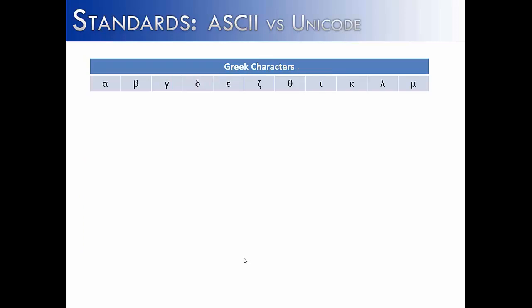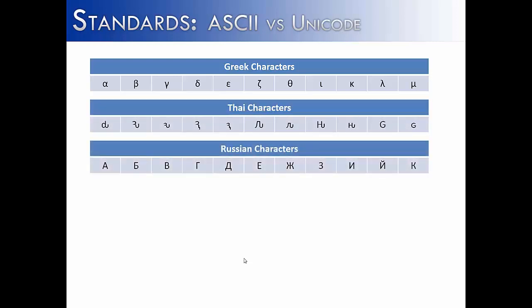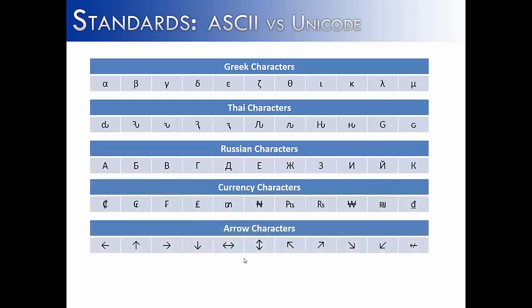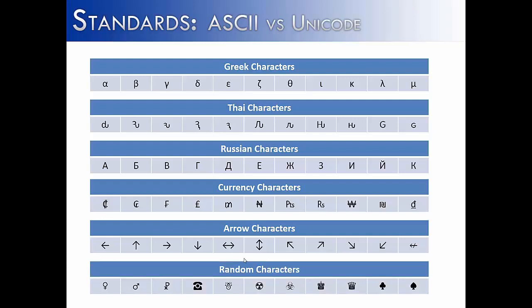Unicode stores all sorts of symbols. We see the beginning of the Greek alphabet, Thai characters, Russian characters or the Cyrillic alphabet, currency characters from around the world, and there's even a section for arrows inside of Unicode. Characters like the male or female symbol, the Cairo, the telephone, a weather alert saying snow, the nuclear symbol, biohazard, king and queen chess pieces, and club and spade card symbols. As the world became more and more connected through computers, there really needed to be a standard by which everyone agreed on which series of ones and zeros represents which character. 256 became far too small, so they increased it to two bytes of information, which now allows for around 65,500 characters.